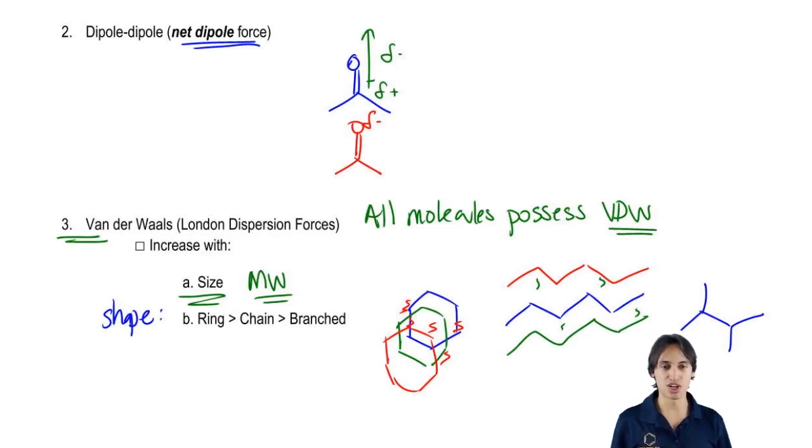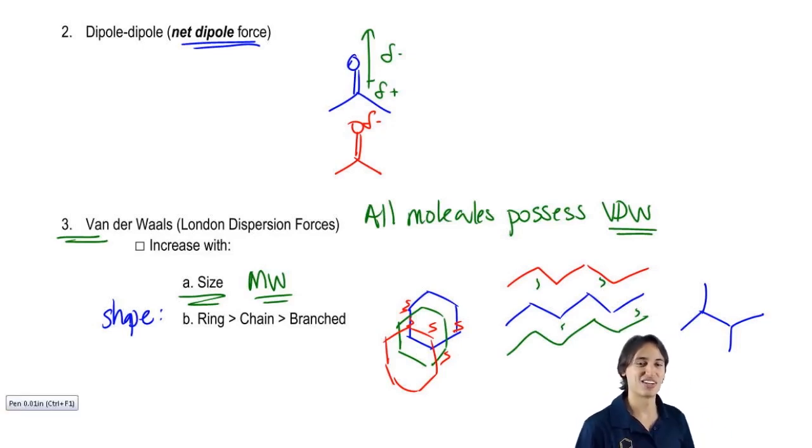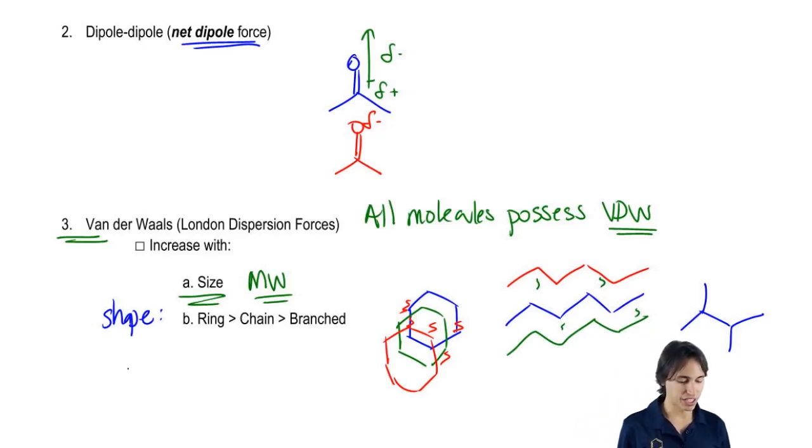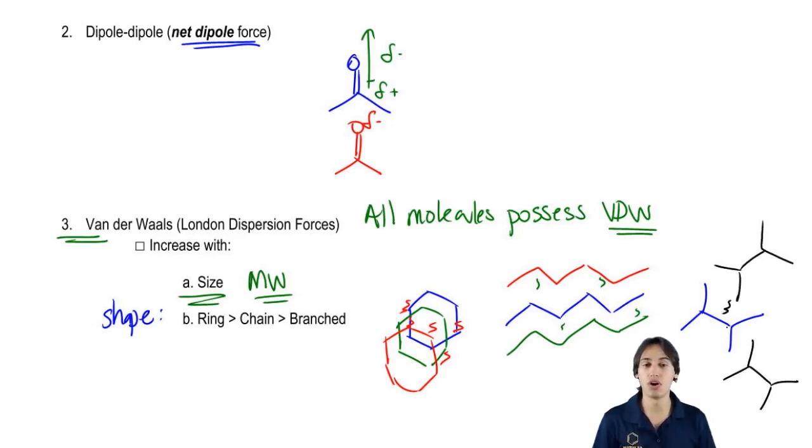Then finally we've got the branch, which I'll try to move out of the way because I know that it's right on top of me. But with the branch, what we find is that there's not really a great way for them to stack together. They wind up kind of having a lot of space in between them. So the van der Waals forces here are going to be very small compared to the van der Waals forces here for the rings. Does that make sense?